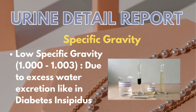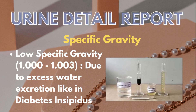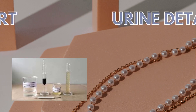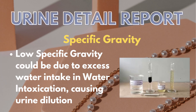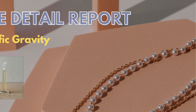If specific gravity is low — between 1.000 to 1.003 — that could be due to excess water excretion like in diabetes insipidus, or excess water intake and water intoxication, causing urine dilution.